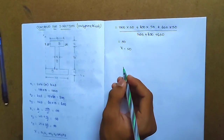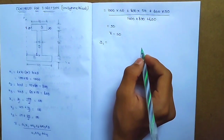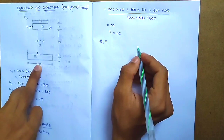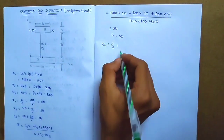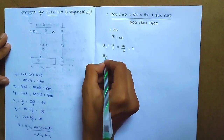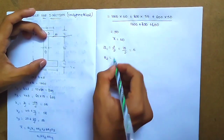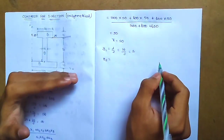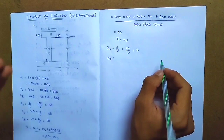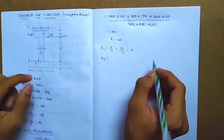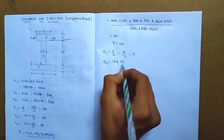Now we calculate y-bar. We need y1, y2, y3, which represent distances upward from the bottom reference. For y1, the first rectangle depth is 10, so y1 equals depth by 2 equals 10 by 2 equals 5. For y2, the second rectangle depth is 80. The base starts after the first rectangle, so we add the first rectangle depth of 10, then 80 by 2 equals 40. So y2 equals 10 plus 40 equals 50.